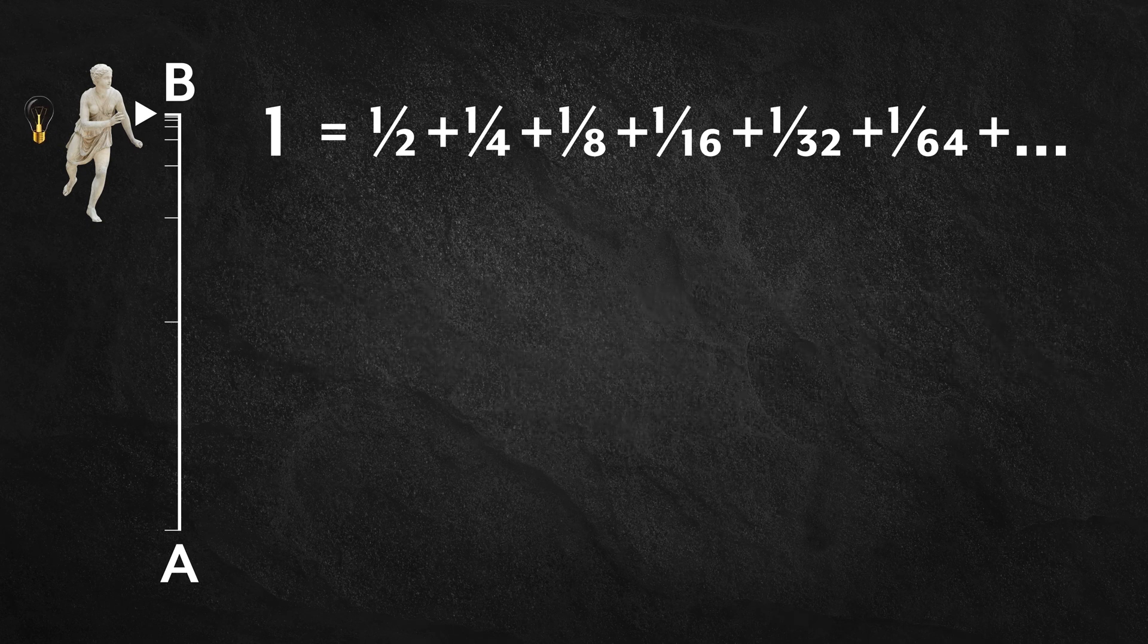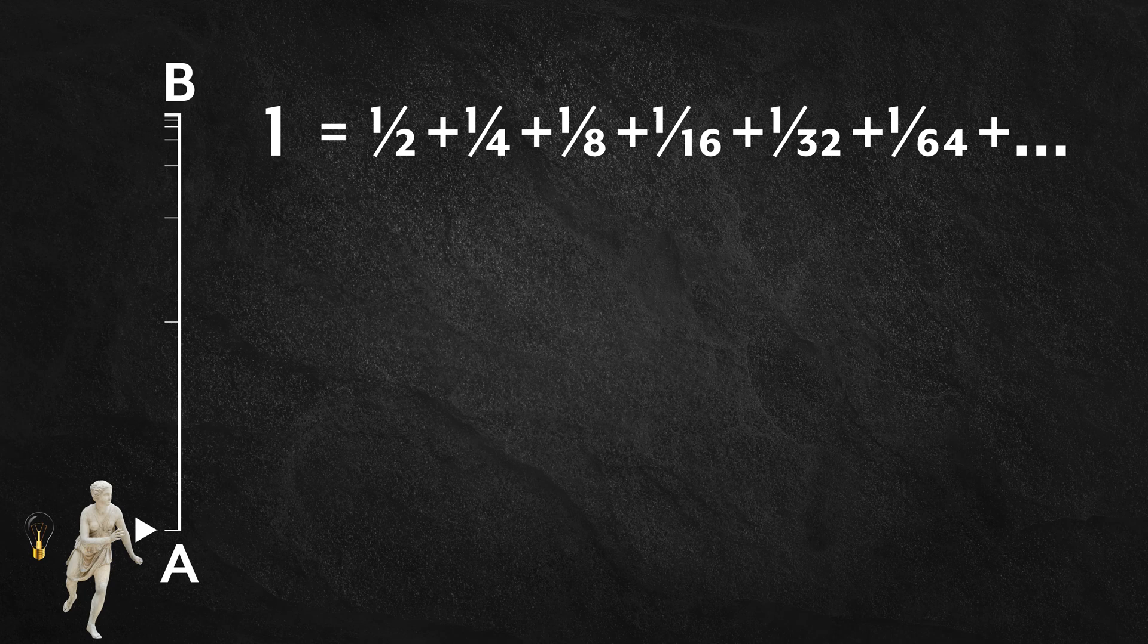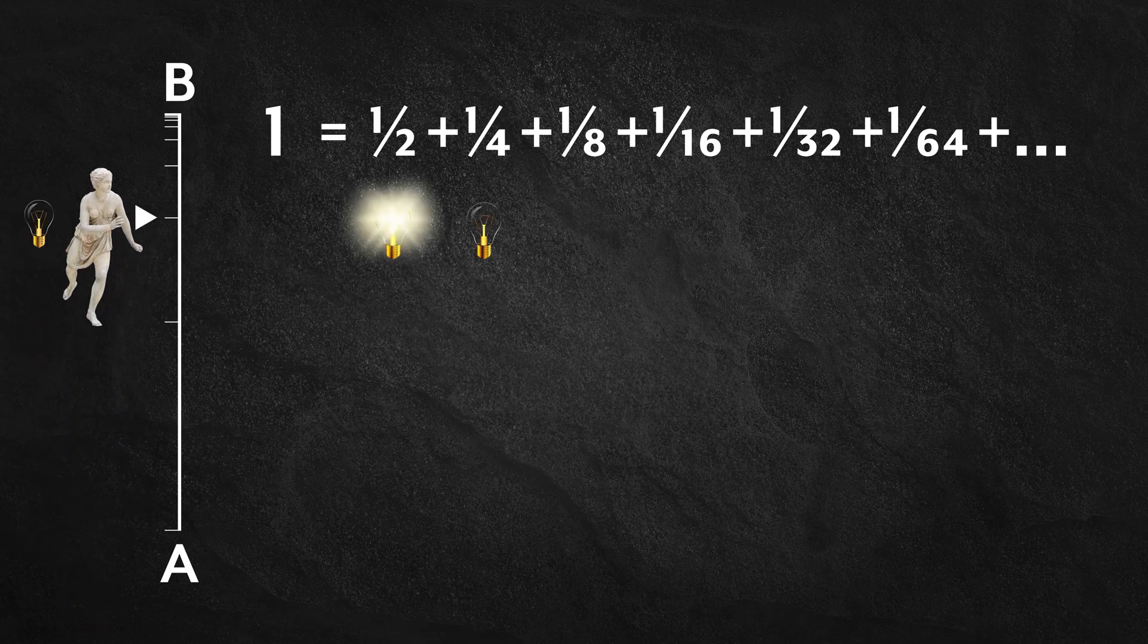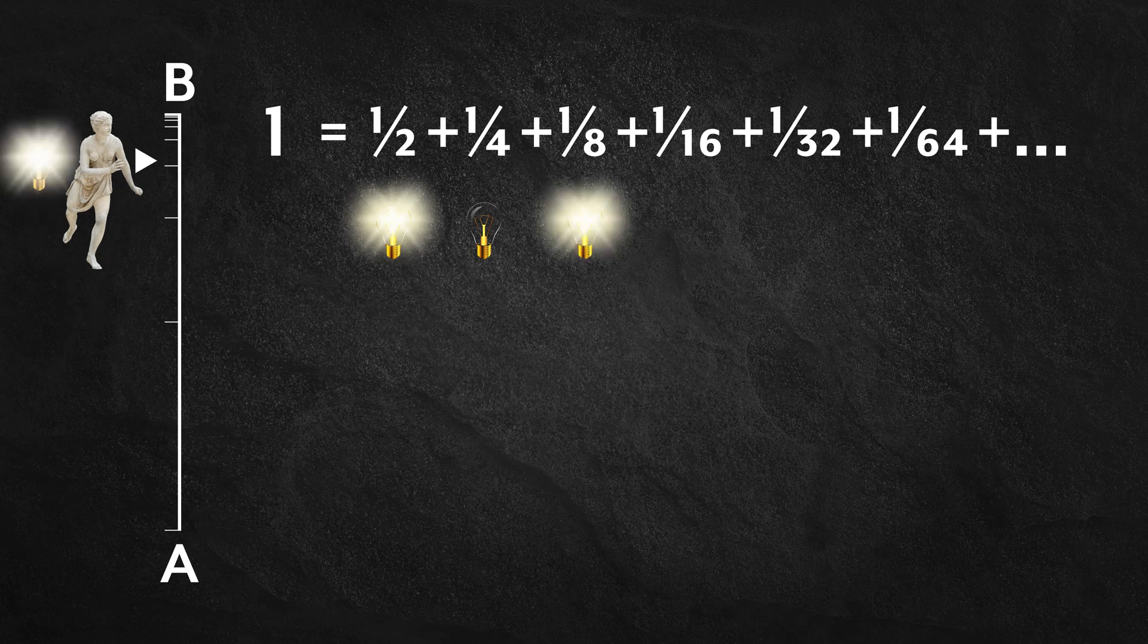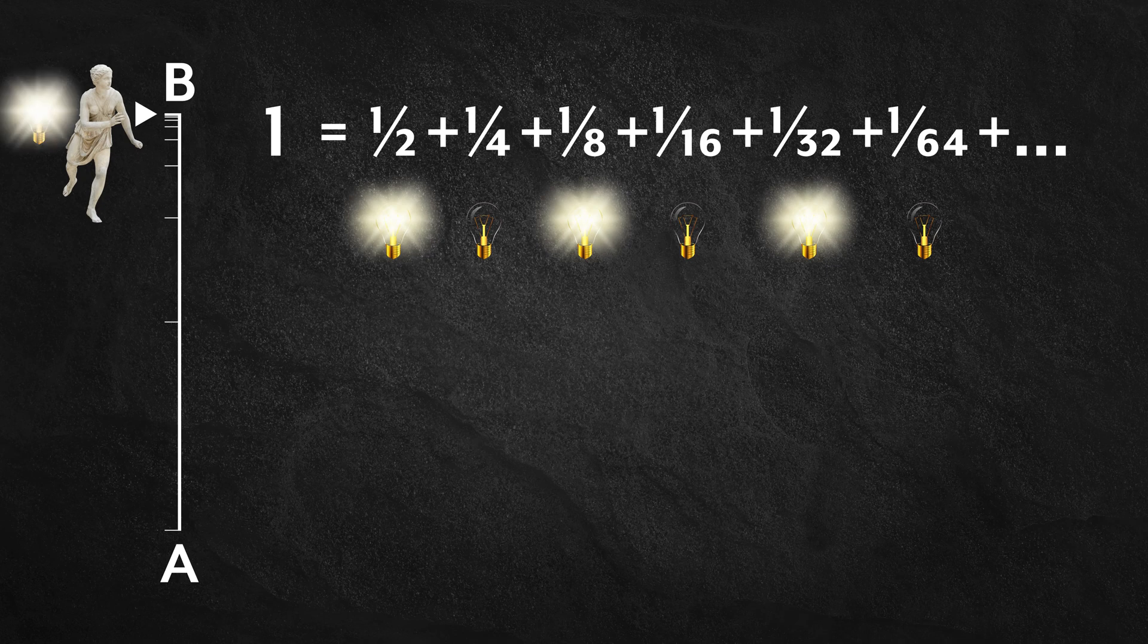Now, let's add Thomson's lamp to the mix. Upon completing the distance associated with each term in the infinite series, a light is alternatingly turned on and off, on then off, then on, then off, and so on, to no end.